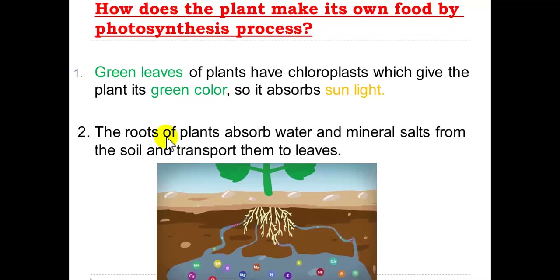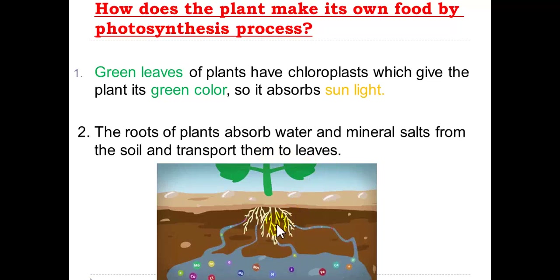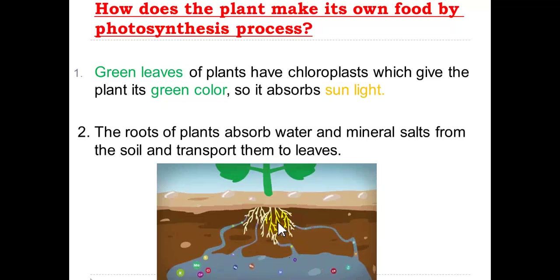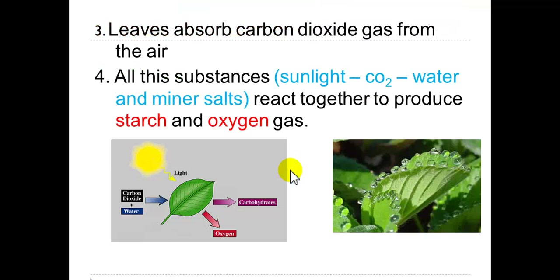The second step: the roots of plants absorb water and mineral salts from the soil and transport them to the leaves. Leaves absorb carbon dioxide gas from the air. All these substances — sunlight, carbon dioxide gas, water and mineral salts — react together to produce starch and oxygen.